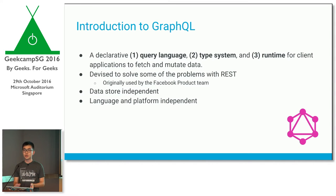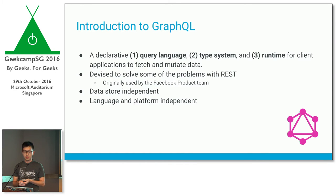GraphQL is data store independent — it doesn't make any assumptions about the database or data store you're using. You could use SQL, NoSQL, or even another REST API. It's also language and platform independent — bindings are available in most major languages and frameworks, so you can definitely use GraphQL for your stack.